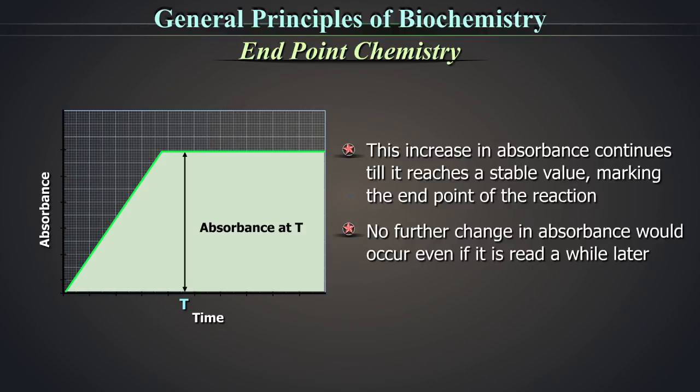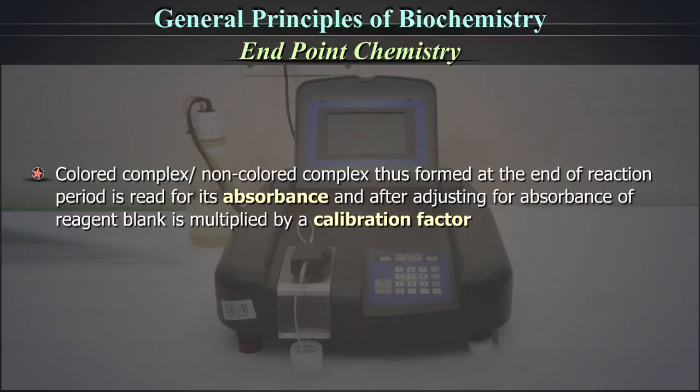No further change in absorbance would occur if it is read a while later. The colored complex or non-colored complex thus formed at the end of reaction period is read for its absorbance and multiplied by a calibration factor to get the value of the analyte in that sample.